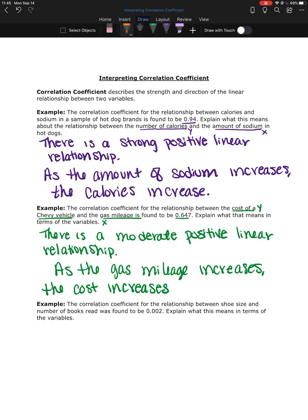Alright, and then our last one, the correlation coefficient for the relationship between shoe size and the number of books read was found to be 0.002.